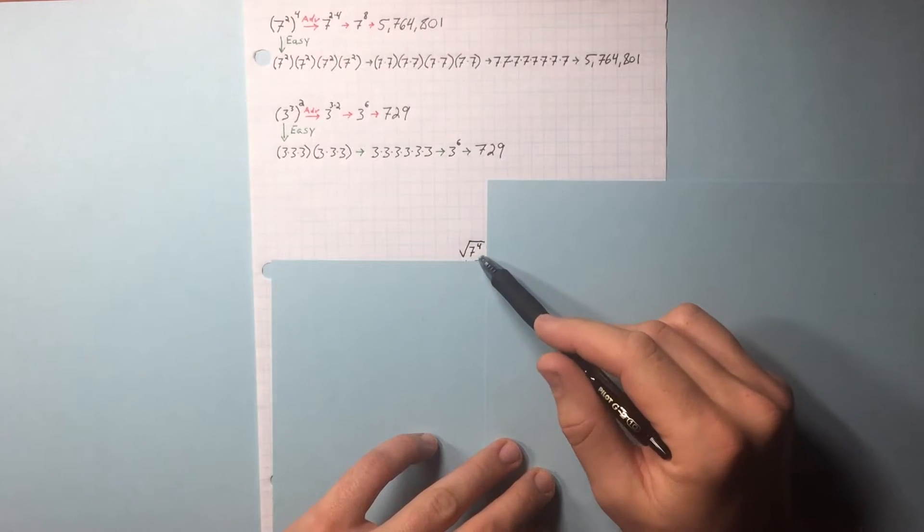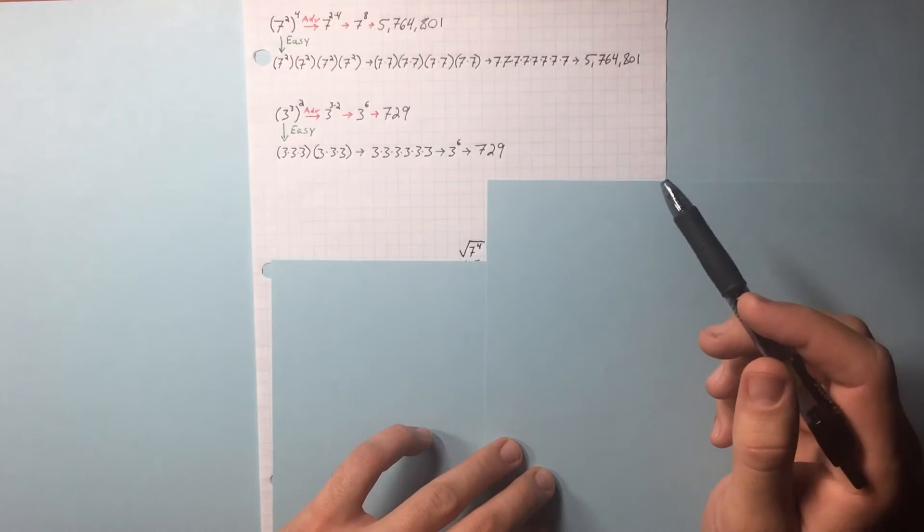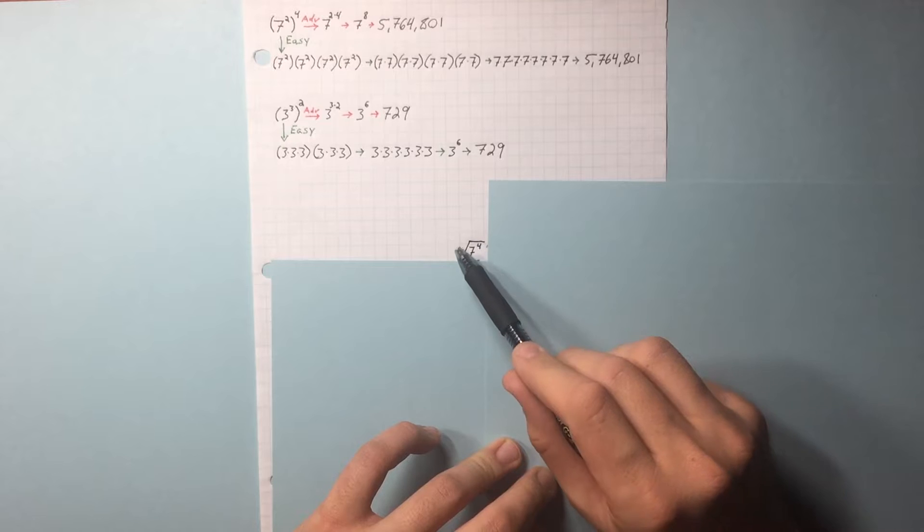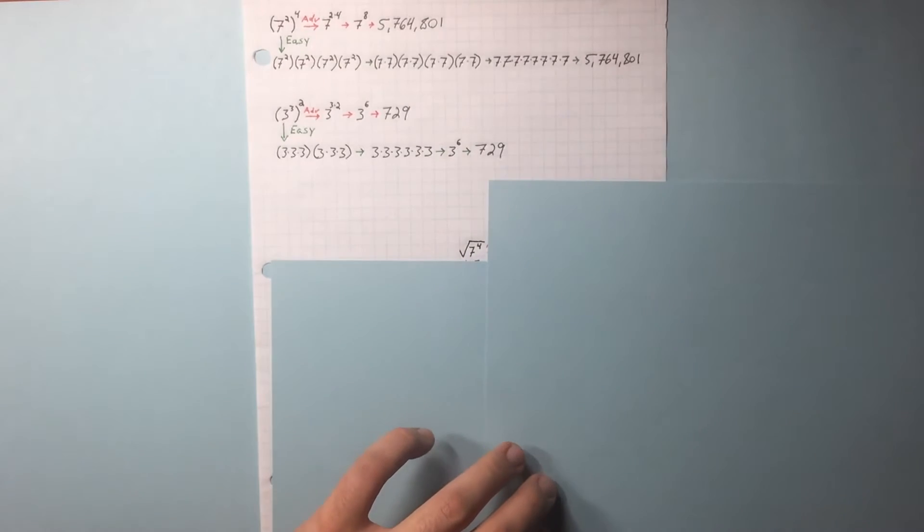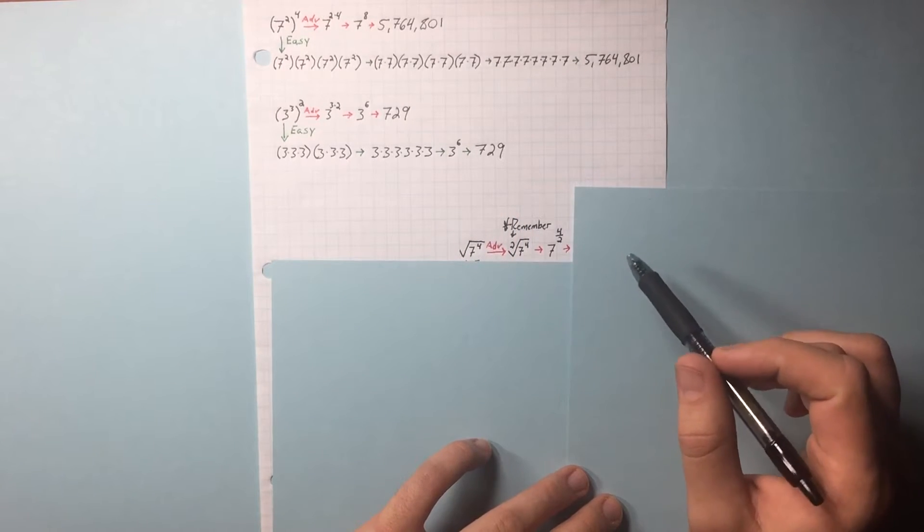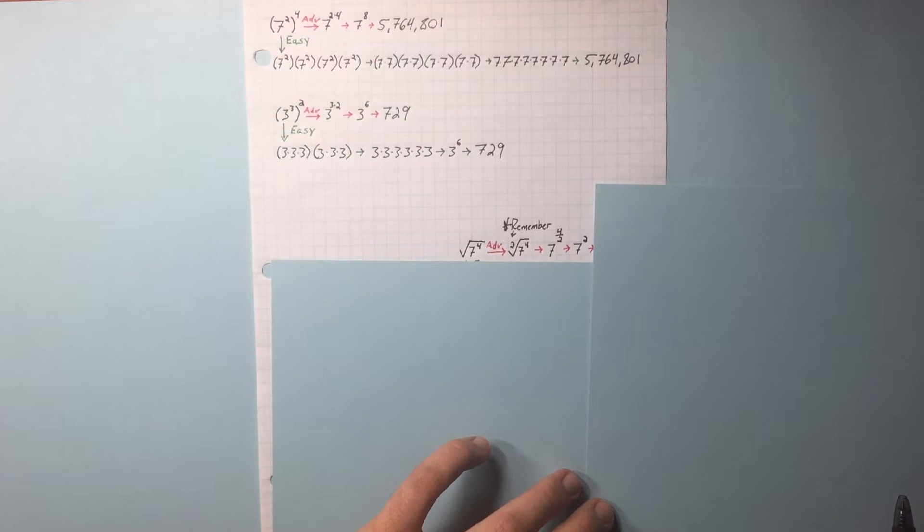It's only getting better, dudes. We have the square root of 7 to the 4th power. When you have one exponent, and you take the square root, that means you need to do the division. To the power of 4 over 2. You have 7 squared. The answer is 49.